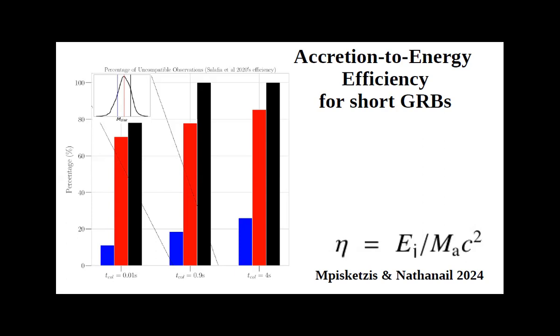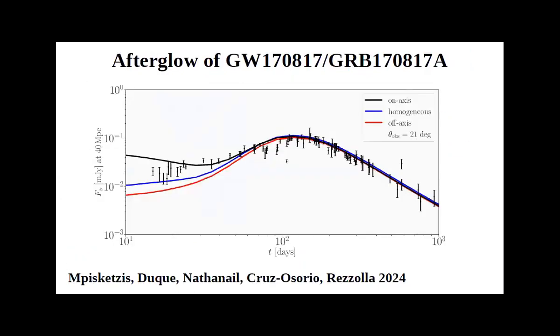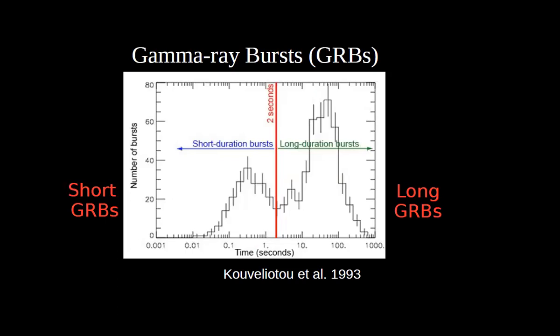Question connecting results to the original bimodal duration distribution: the ~20% incompatible fraction could correspond to overlap in the bimodal distribution from Kouveliotou (1993). By 2020 the distribution looks more like one distribution with a bump on the left, and people debate whether they are truly distinct classes or one continuous population.